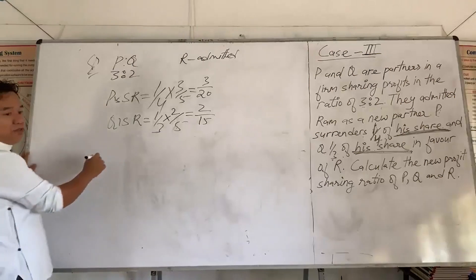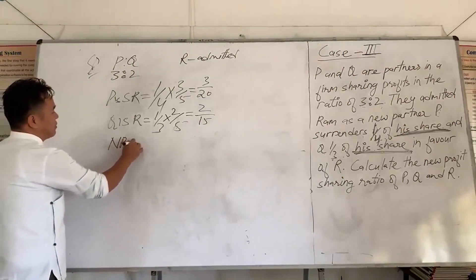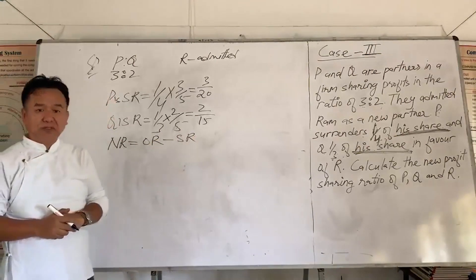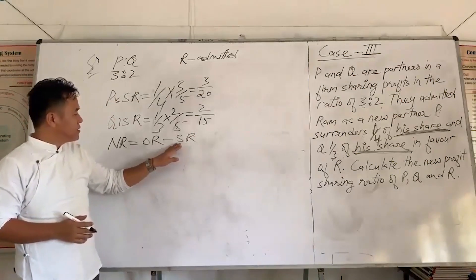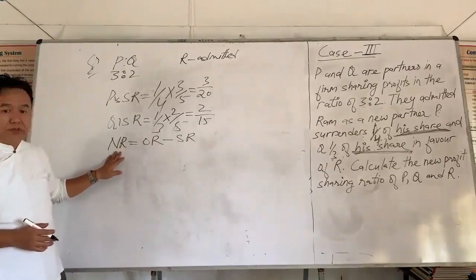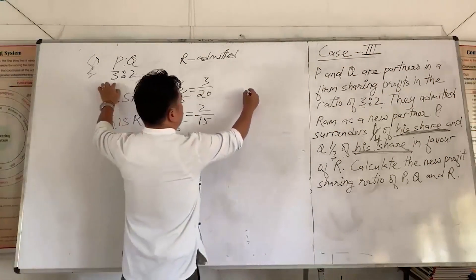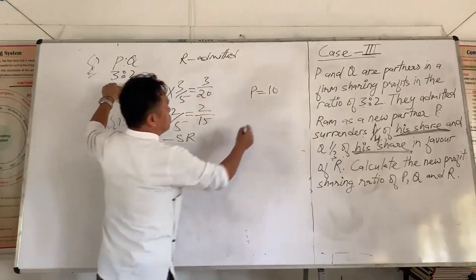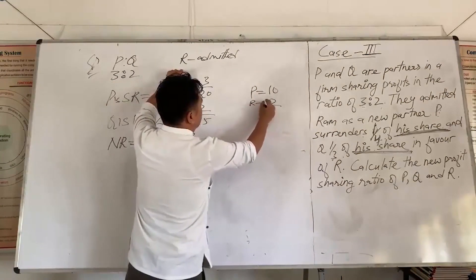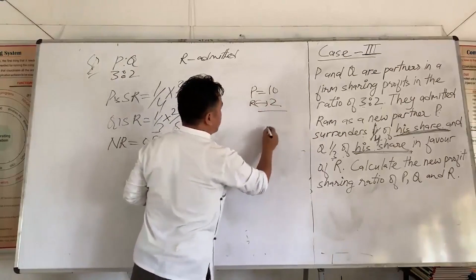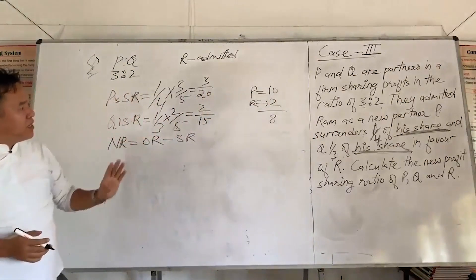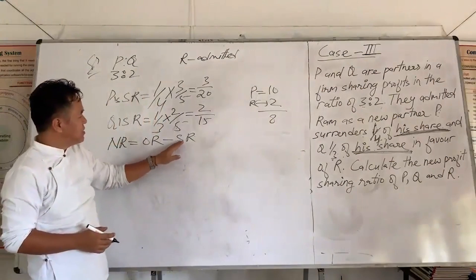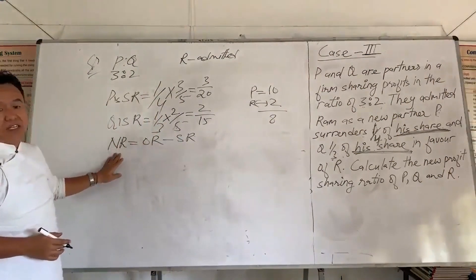Now we can apply the formula: new ratio equals old ratio minus sacrificing ratio. Why do we deduct sacrificing ratio from old ratio to get new ratio? Suppose P has 10 apples and sacrifices 2 apples to R — then P is left with 8. So currently P's new holding is 8. That's why sacrificing ratio is deducted from old ratio to get new ratio.